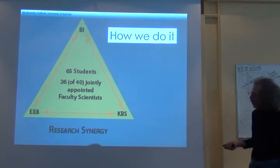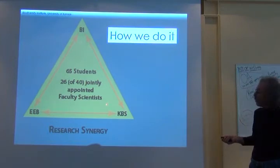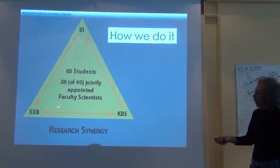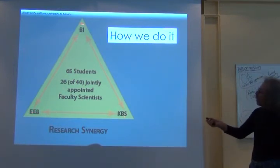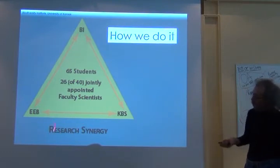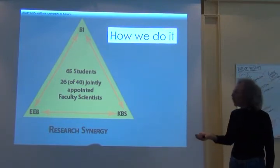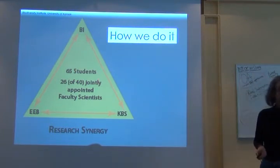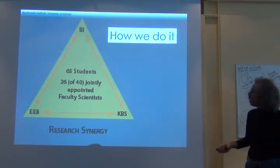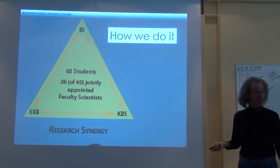We achieve this through research synergy. We have partnerships within the university — all 26 of our faculty are jointly appointed in Ecology and Evolutionary Biology, the university department, or in the Kansas Biological Survey. But we all are working as collaborators. We have 65 students in residence working in our collections, and they have different mentors and advisors throughout EEB, the KBS, as well as the rest of the university.